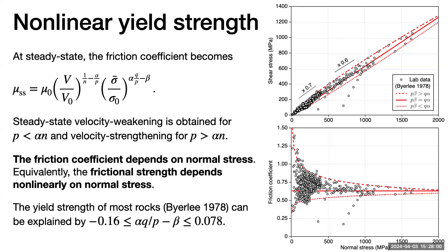Taking one of the most famous papers in frictional literature — Byerlee (1978), five of whose ten pages show that frictional stress is non-linear with normal stress — we say it's 'kind of linear.' This approximation is called Byerlee's law, but it's not really a law — it's not even what the data show. If you calculate the friction coefficient by dividing shear stress by normal stress, it's not constant at all. In fact it is unbounded — it goes to infinity as normal stress vanishes.